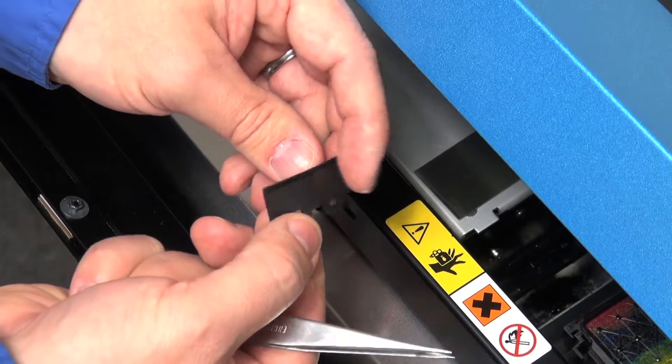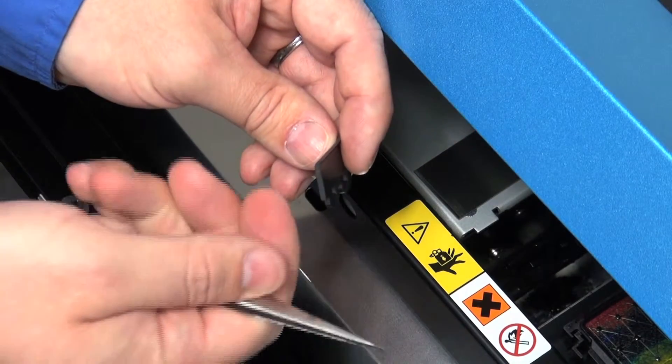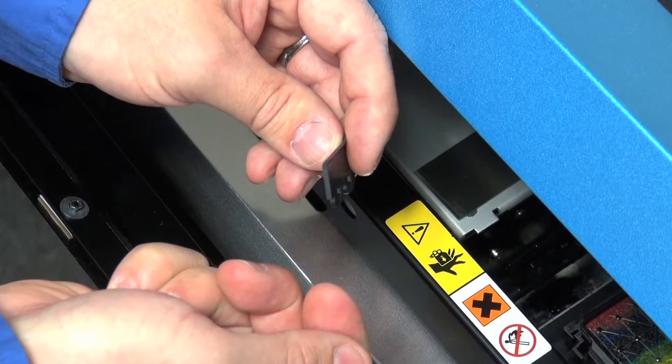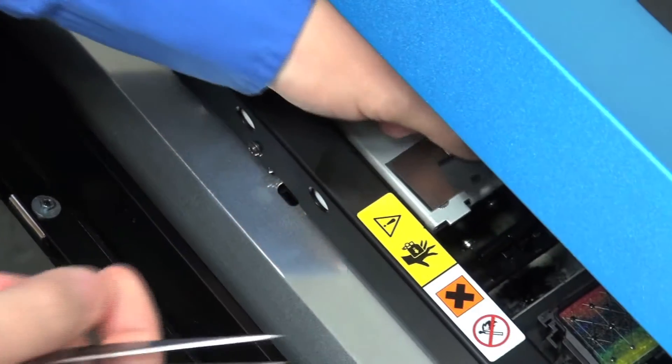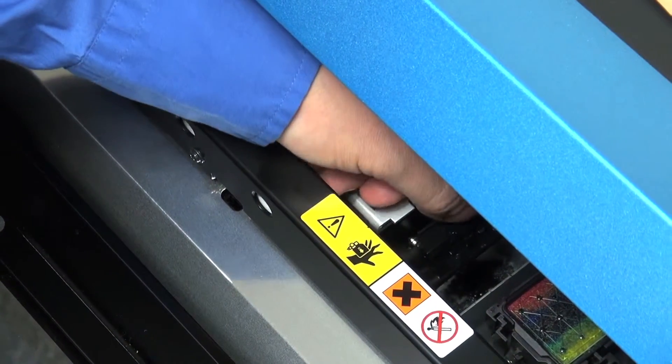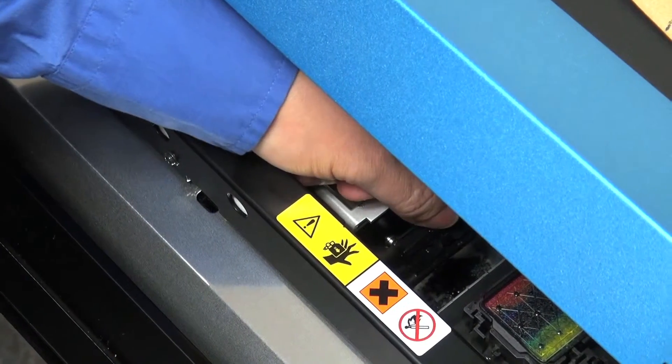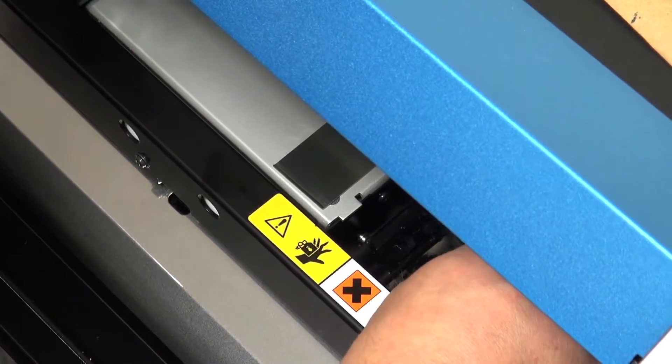The new wiper will be inserted with the curve facing towards the capping station where the head normally rests. Place it back into the holder and ensure that the tabs are over the stanchions.